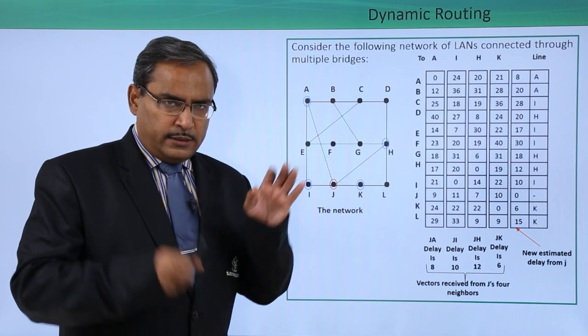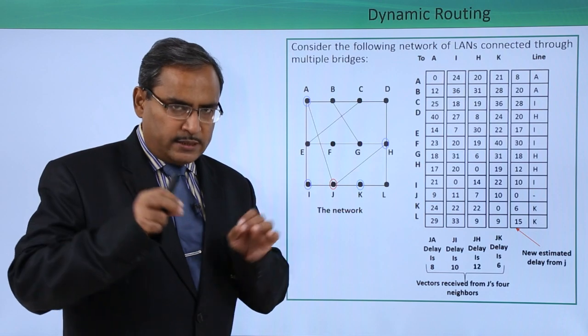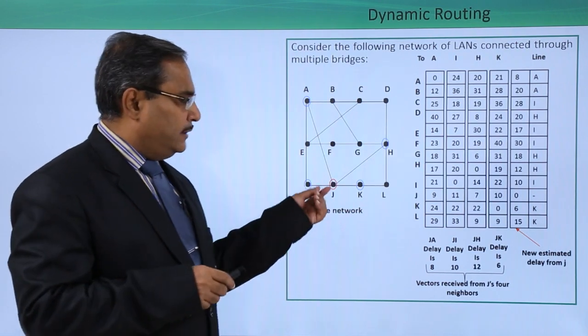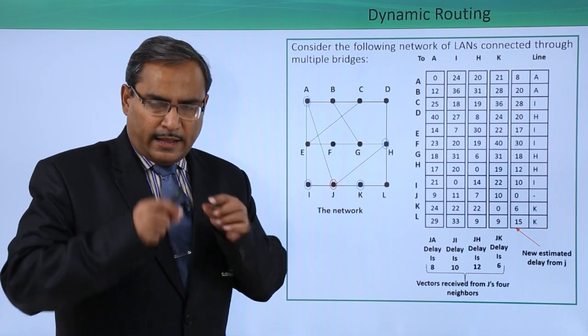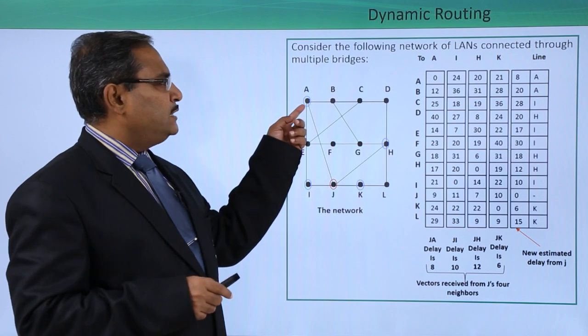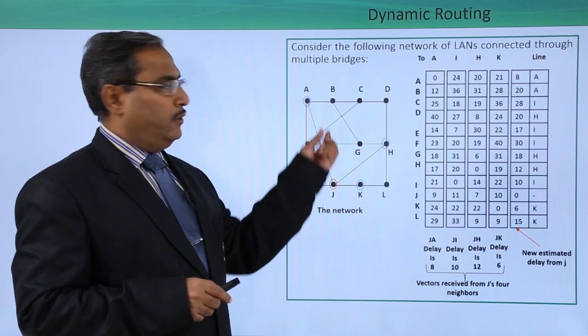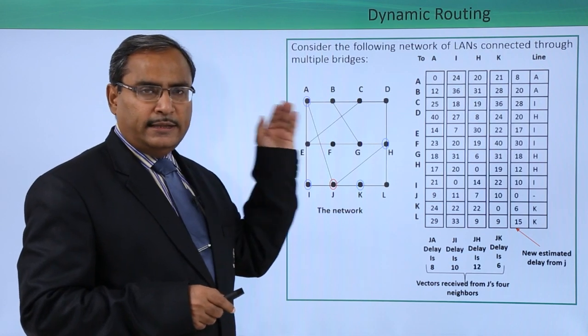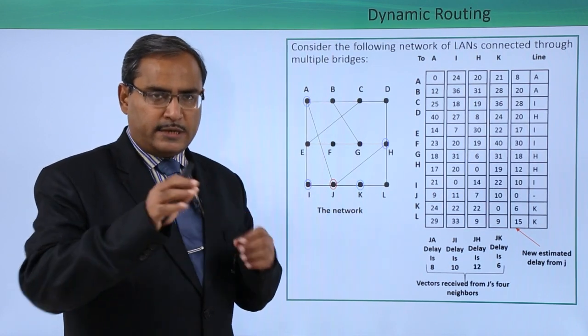J will ask the respective neighbors to send their routing tables, and then J will form its own routing table depending on that, which will be broadcasted to all four neighbors. Similarly, each neighbor will collect routing tables from its own neighbors, form its routing table, and broadcast to their immediate neighbors.